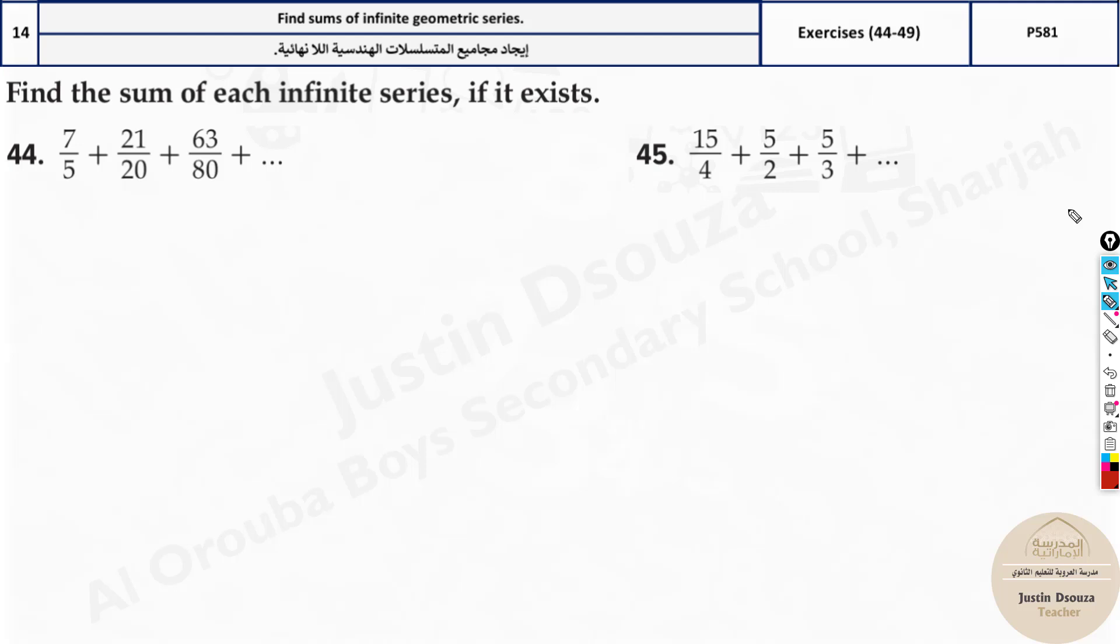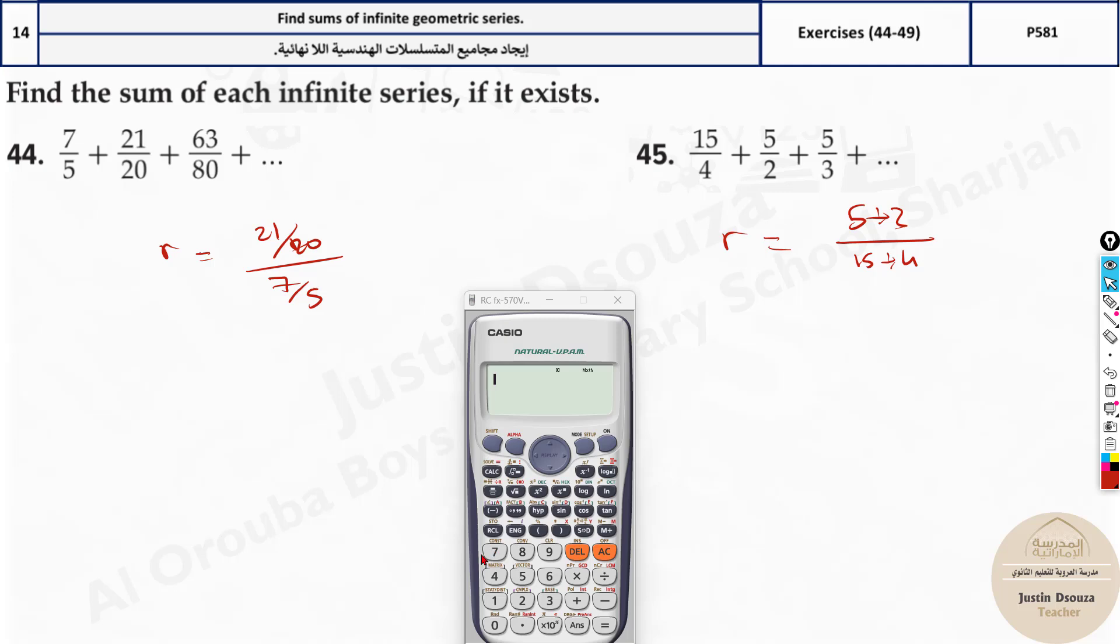First step, you need to find r for all the terms like this. Just find r. Second term, 21 divided by 20 divided by 7 divided by 5. Or it's easier to write like this: 5 divided by 2, the whole fraction symbol, divided by 15, divided by 4. You can solve it, try solving it over here. But it's better to use calculator. Saves a lot of time.